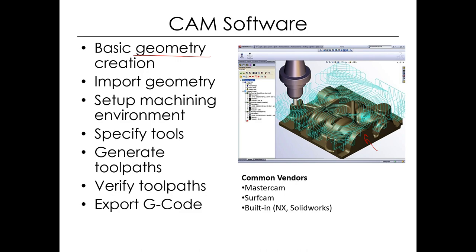The basic process: you create your geometry and bring it into your CAM program. Some CAD software has this built in — for example, SolidCAM is an add-on to SolidWorks so you can go back and forth between your modeling and CAM environment. NX also has CAM built in — it's got a machining module that's actually very capable, on the order of really high-end standalone CAM packages. That's what I do most of my CAM in nowadays.